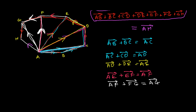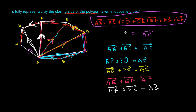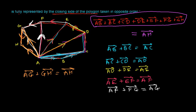The last triangle formed is triangle AGH. In triangle AGH, this is one side and this is another side, so the resultant is AH. Adding AG and GH, the side AH gives my resultant. So AG + GH = AH.